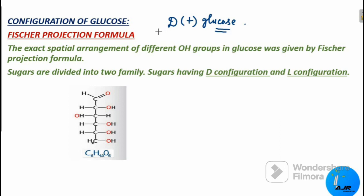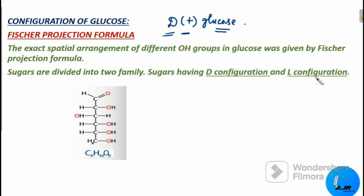In the name D(+)-glucose, 'D' represents the configuration, while '+' represents the dextrorotatory nature of glucose — meaning the glucose solution rotates plane polarized light in the clockwise direction. Sugars are divided into two families: those having D configuration and those having L configuration.